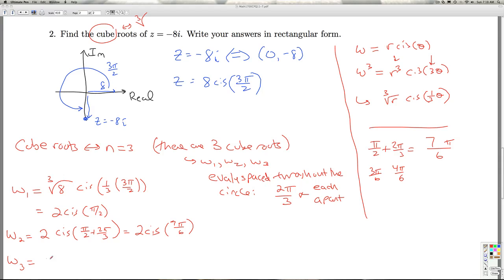How do I get W3? Well, I add 2 pi over 3 to this guy. So 7 pi over 6 plus 2 pi over 3, that's 4 pi over 6, that's 11 pi over 6.